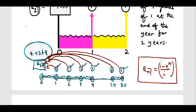So A30, if you want to find it, will be (1 − V³⁰) / i. That's all. And if you apply this formula, you get 9.4269.